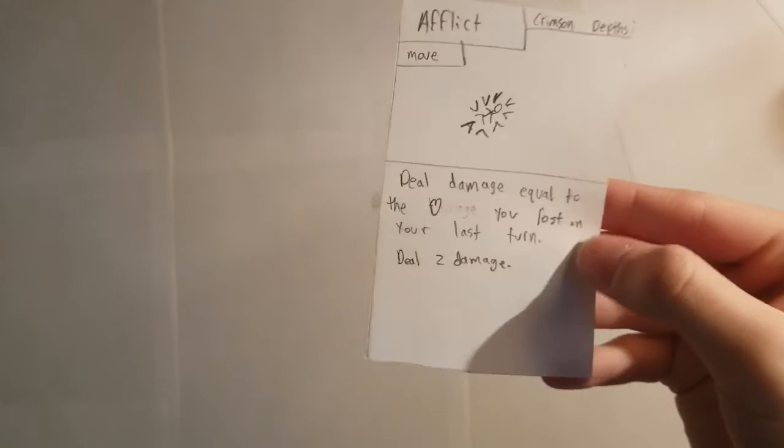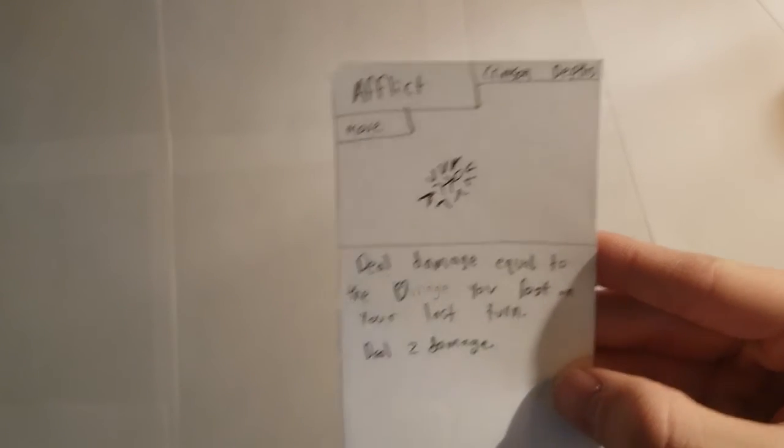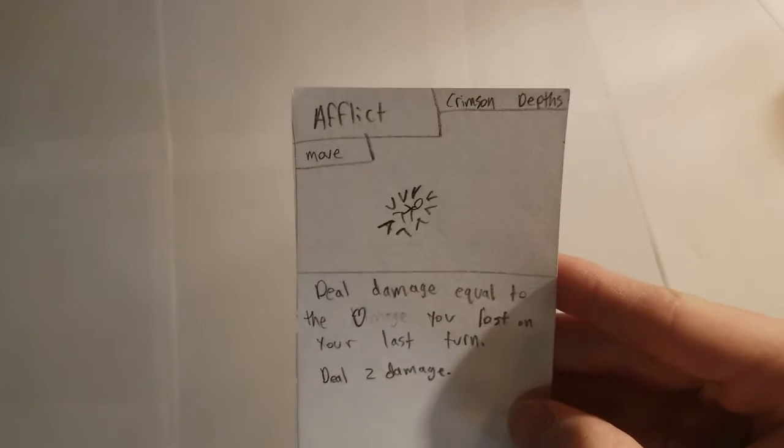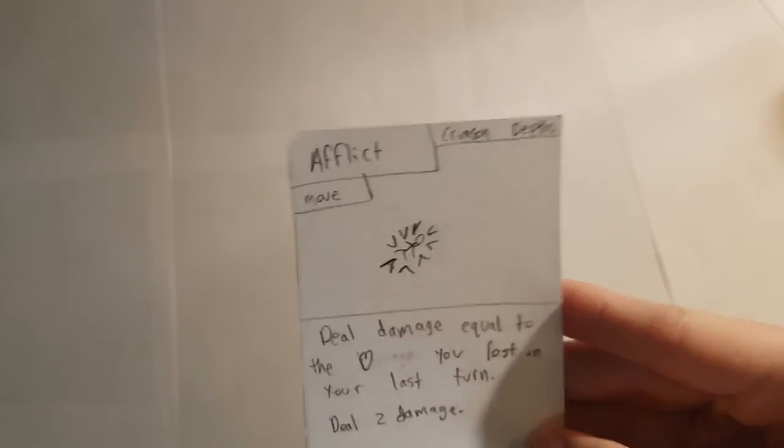This move, Afflict, gets to deal extra damage for every damage you dealt to yourself last turn. You can play highly efficient moves that also damage yourself and then play this for extra damage. This makes it a particularly good move in those strategies.